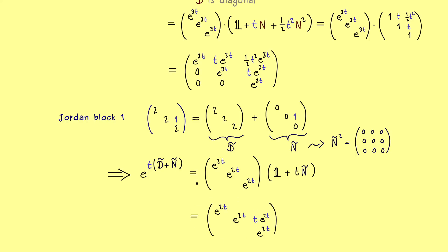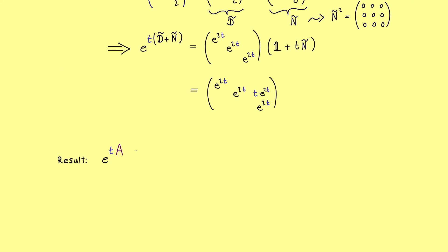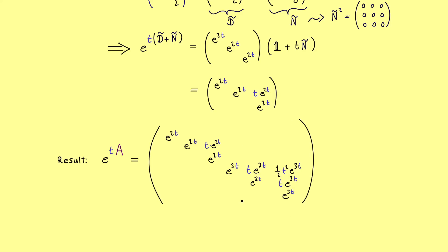The only thing that remains now is to put both Jordan blocks together again. The result we get is the full matrix exponential for the matrix A — a 6×6 matrix in block form, with the first Jordan block first and the second Jordan block second. Inside the blocks it could look more complicated, but the result is there: we got the general solution by considering the matrix exponential. For any Jordan normal form, the calculation works like we have shown here.